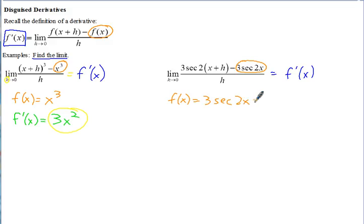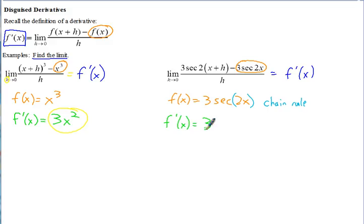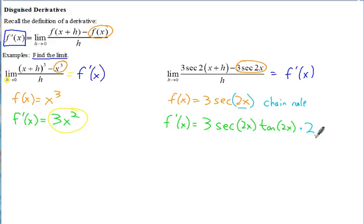This limit equals the derivative of that function. Put parentheses around the 2x to remind yourself of the function inside — that means we're going to need the chain rule. The constant on the front just stays as 3, and then we take the derivative of secant 2x. Using the chain rule on the outside: the derivative of secant is secant times tangent, so we get secant 2x times tangent 2x. Then multiply by the derivative of the inside function: the derivative of 2x is 2.